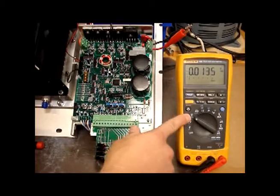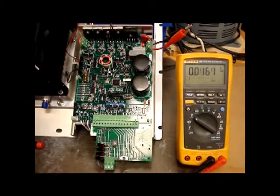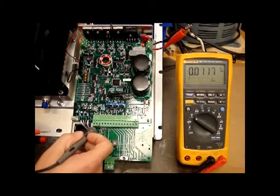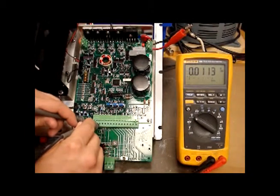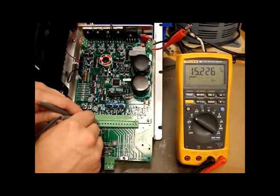We have our multimeter set at DC voltage readings, and I'll take my negative lead here on pin 3, positive lead on pin 1. Now, we should get 15 volts, and we do.